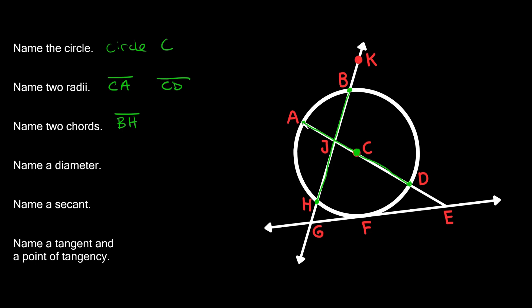And another chord would be from A to D. And this is kind of a special kind of chord, because this is specifically the diameter. And we know it's the diameter because it goes through the center of the circle. So segment AD is also a chord.